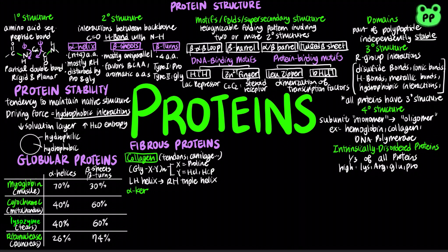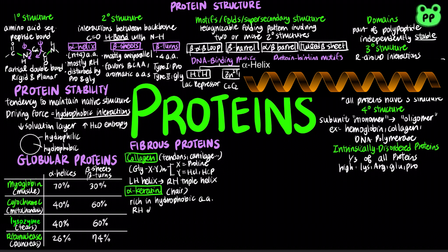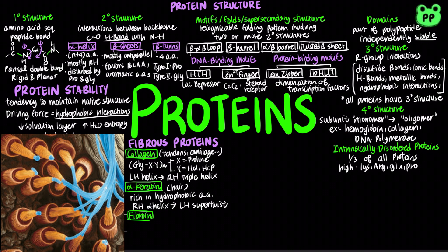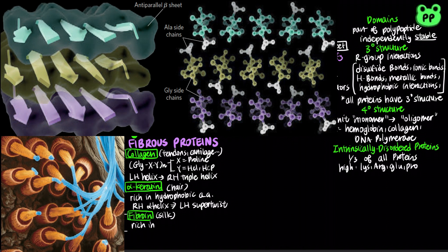Alpha keratin is a type of fibrous protein that is the major constituent of our hair. They are rich in hydrophobic amino acids and are arranged in a right-handed alpha helix, which forms into a left-handed super twist. Fibroin, the protein of silk, is produced by insects and spiders. It is rich in small amino acids including glycine, alanine, and serine, and its polypeptide chains are predominantly beta sheets.